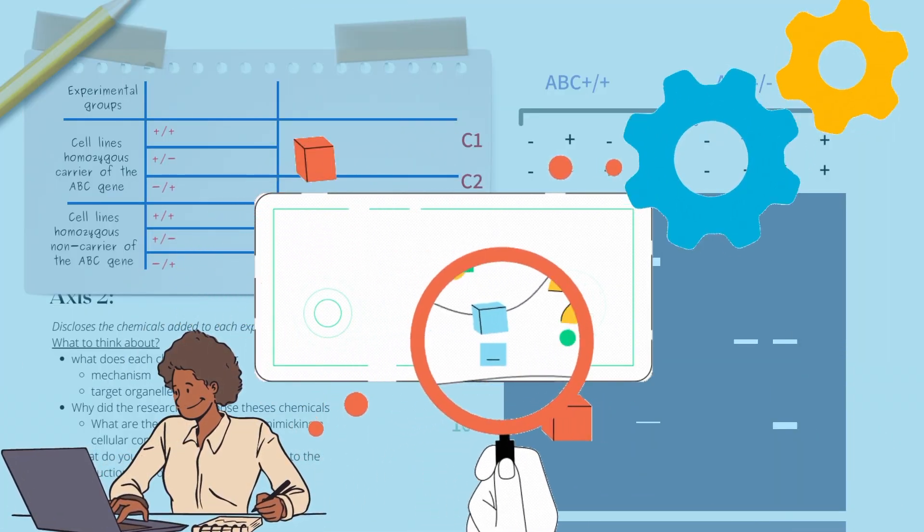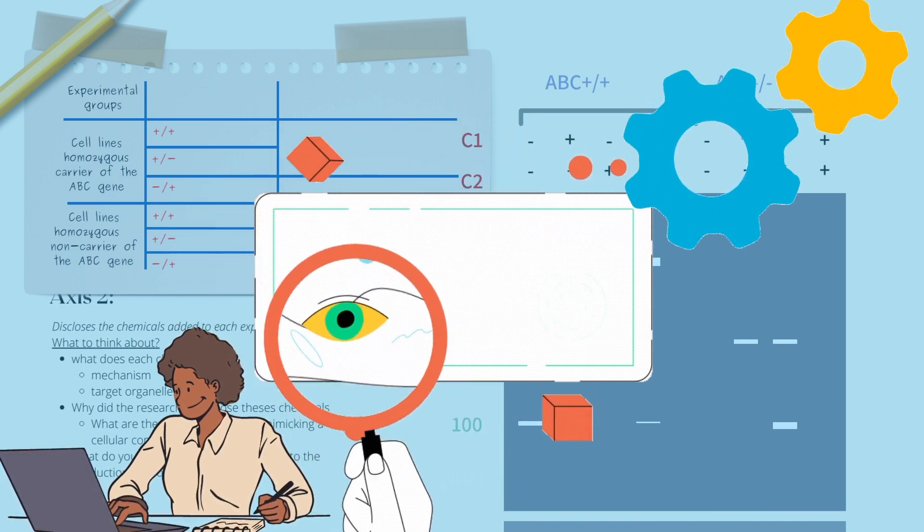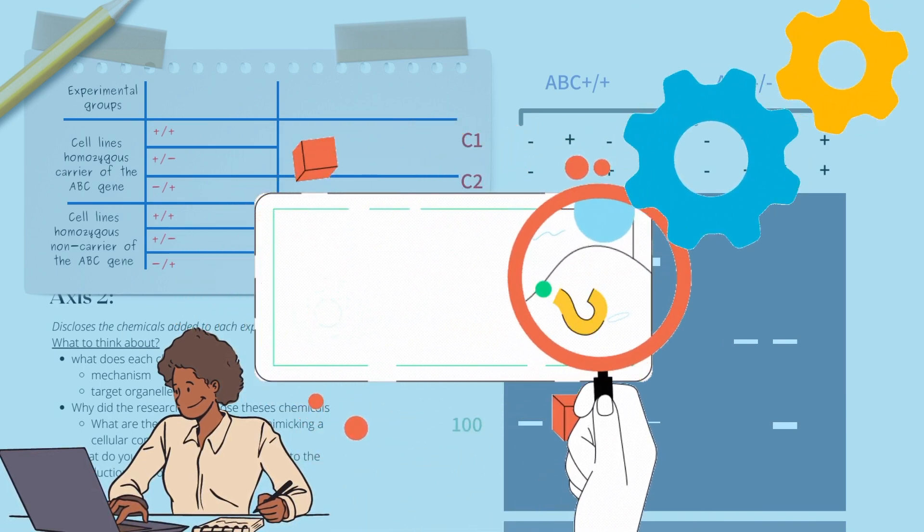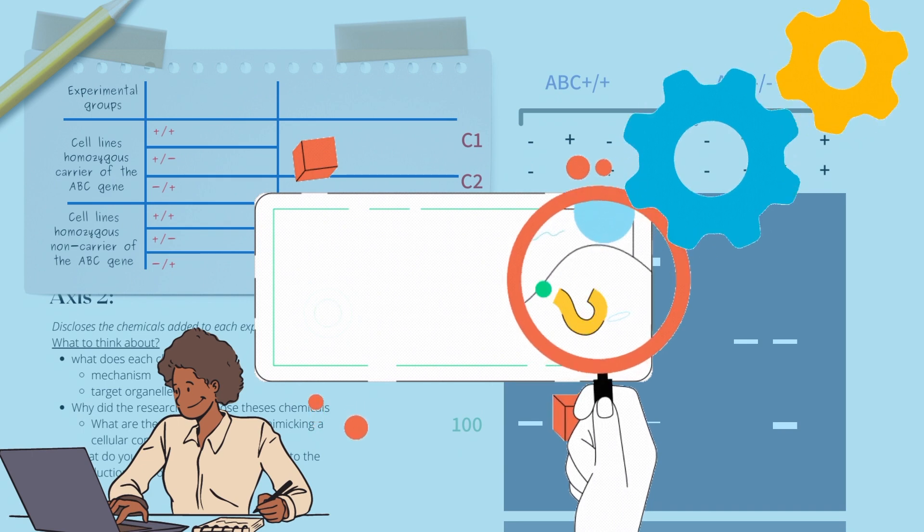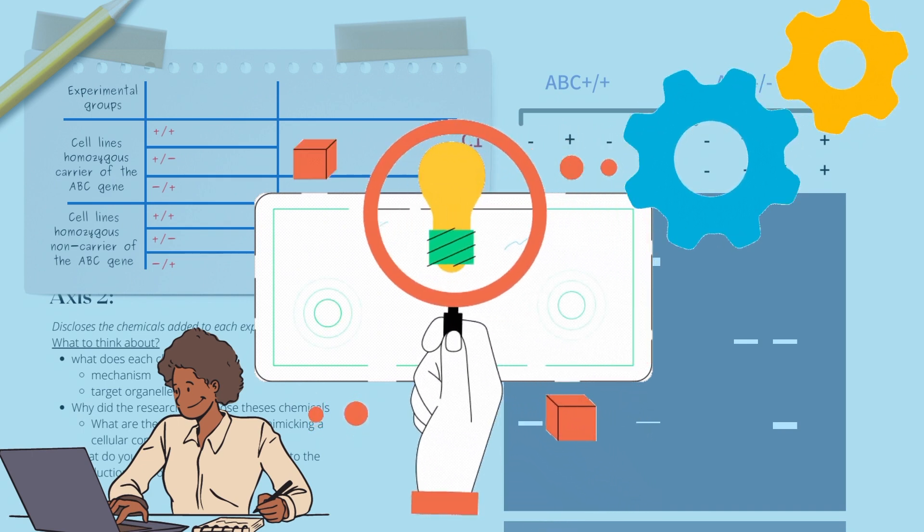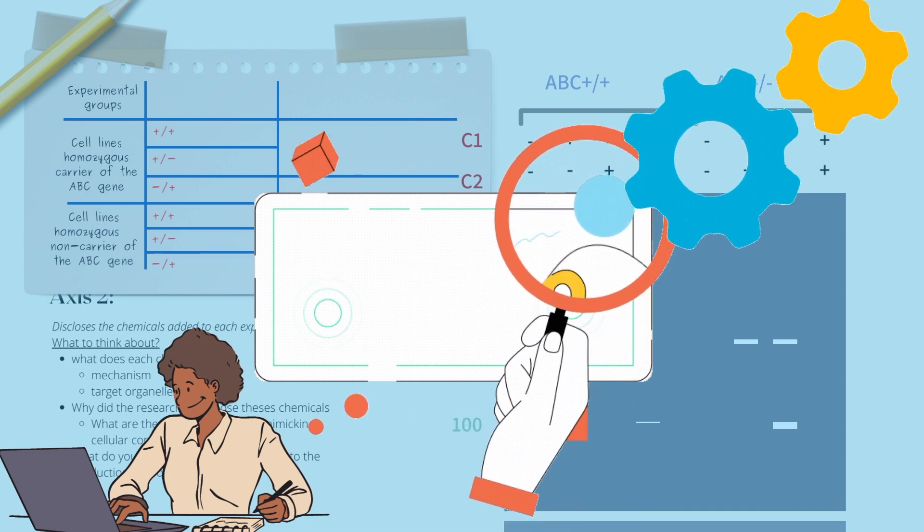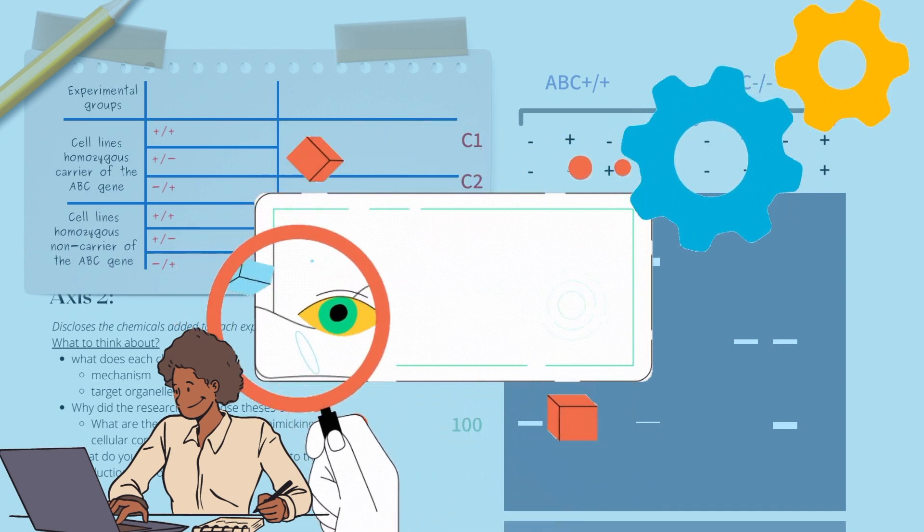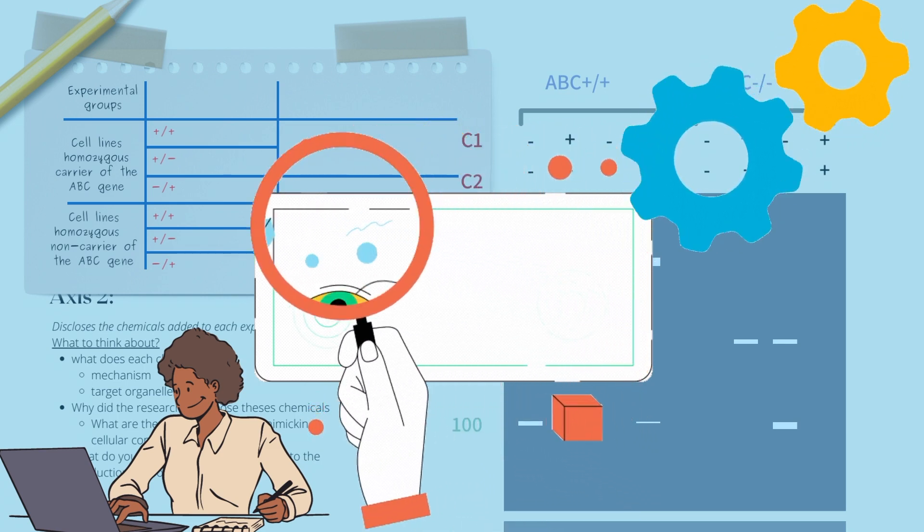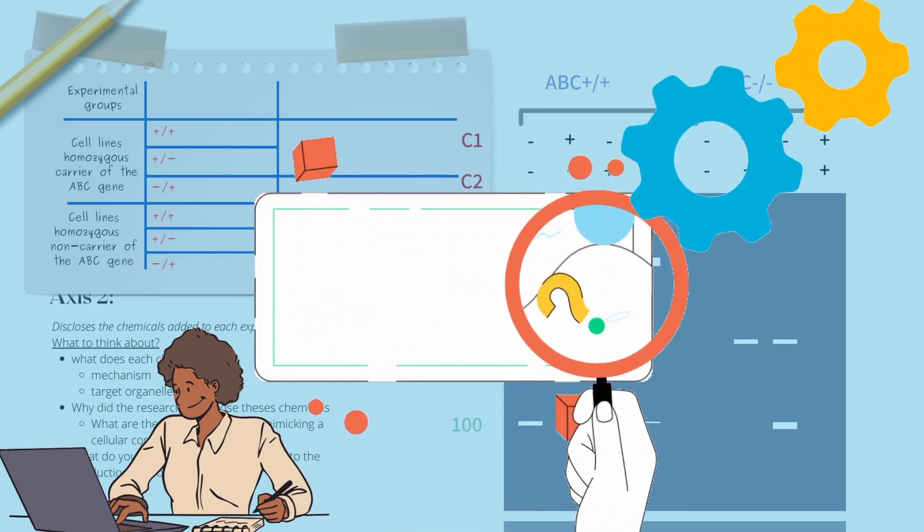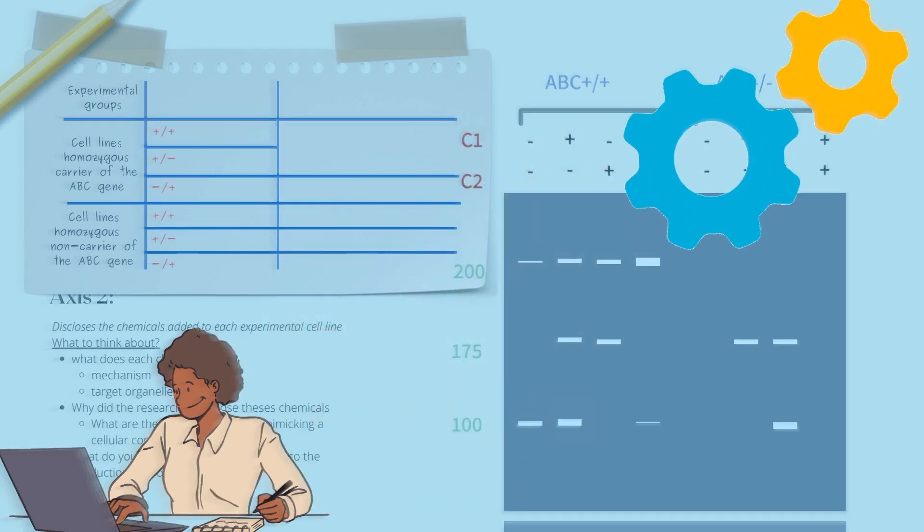Remember how Google was not as important for the first axis? Well, let's do the complete opposite for axis number two. I encourage you to do a deep dive and stalk every aspect of the chemicals. Finding mechanisms and what the chemicals target, specifically which organs or cellular pathways they affect, is very important. It's also important to follow along with the thought processes of the researchers. Why did they use these chemicals? Specifically, what environmental conditions are the researchers trying to replicate through the use of these chemicals? And oftentimes, most answers are right under your nose. So make sure to read the article thoroughly.